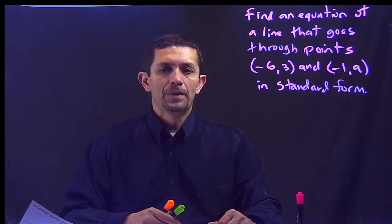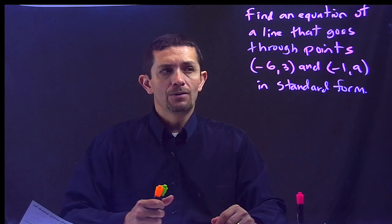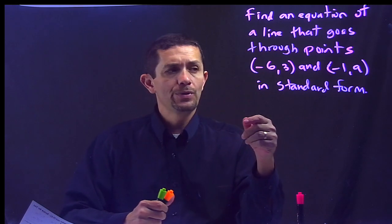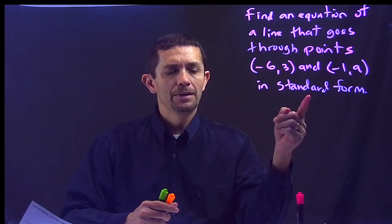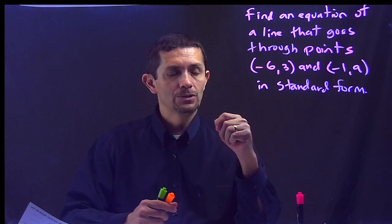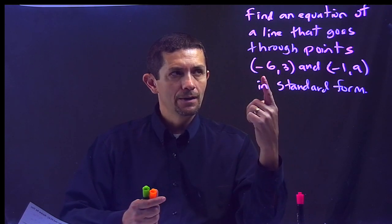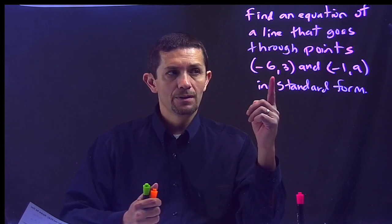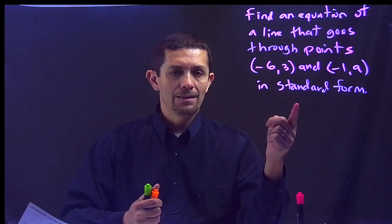Hi, this is Mr. Rego, and we're going to find an equation of a line that goes through points negative 6, 3 and negative 1, 9 in standard form. Again, we're going to write an equation of a line that goes through two points in standard form.